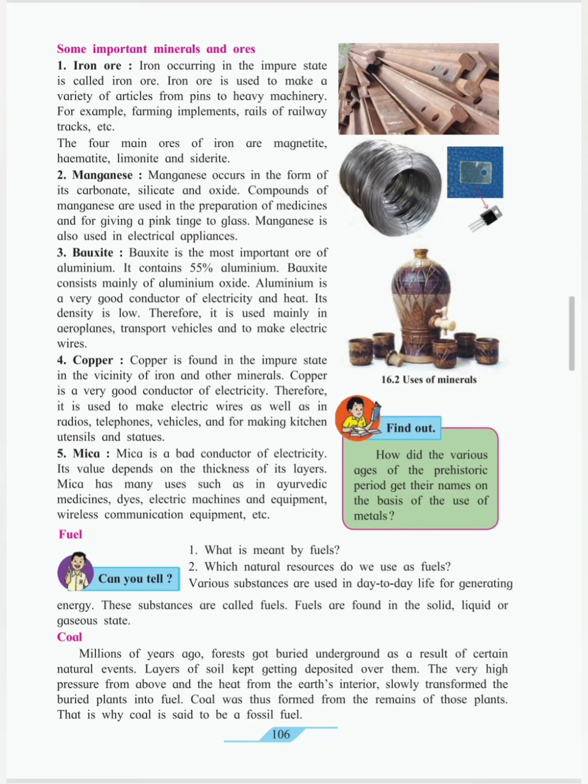These are some important minerals and ores: iron ore, magnesite, bauxite, copper and mica. Fuels are found in solid, liquid or gaseous state. Petrol, diesel, oil, kerosene, wood and coal are some different types of fuels.